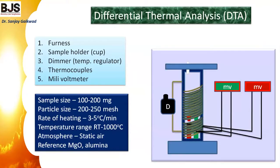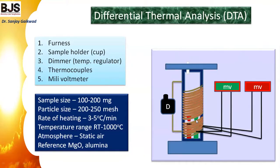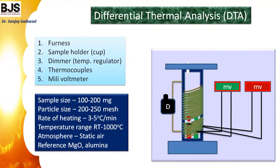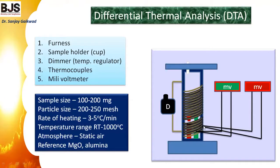In DTA, instead of measuring weight loss, we measure the temperature difference between two compounds. Both are kept in the furnace, heated under controlled conditions using a dimmer. One is a standard compound and the other is the unknown sample. Using thermocouples, the temperature of each compound is measured in millivolts and converted into degrees Celsius or Kelvin.